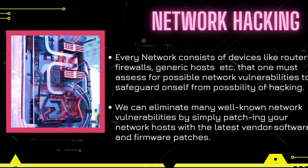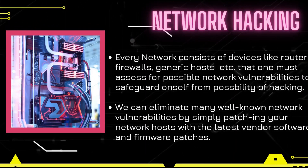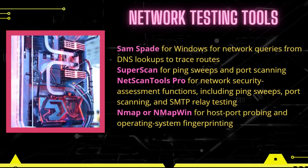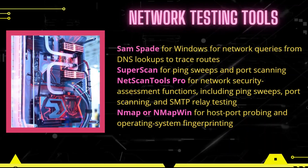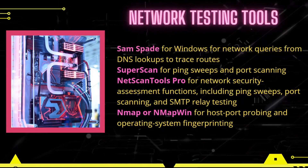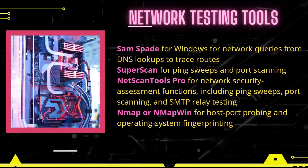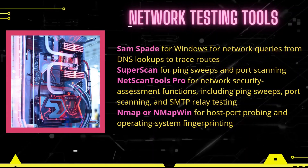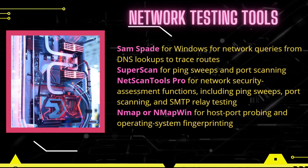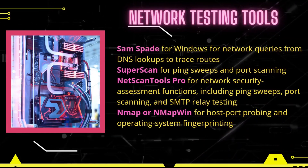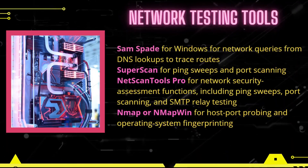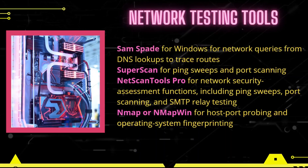But we can eliminate well-known network vulnerabilities. Let's take a look at the network testing tools. Sam Spade for Windows performs network queries from DNS lookups to trace routes. SuperScan is used for ping sweeps and port scanning. NetScan Tools Pro covers network security assessment functions including ping sweeps, port scanning, and SMTP relay testing. Nmap or NmapWin is used for host port probing and operating system fingerprinting.